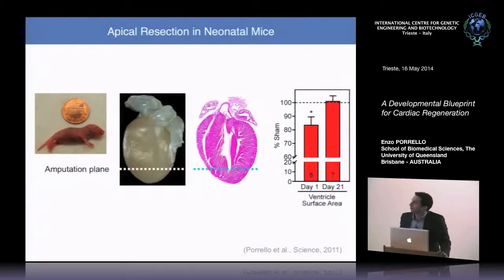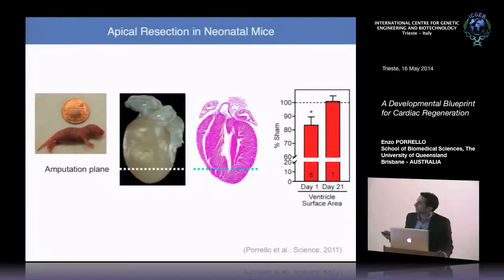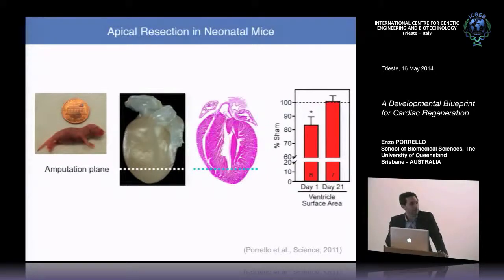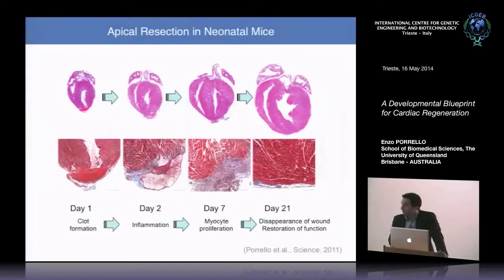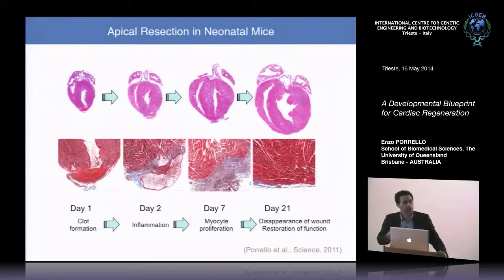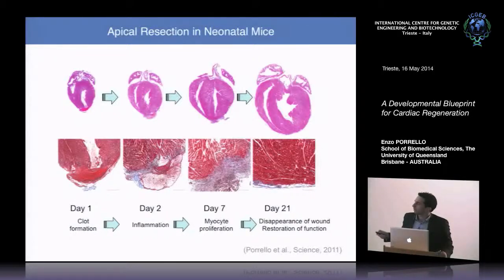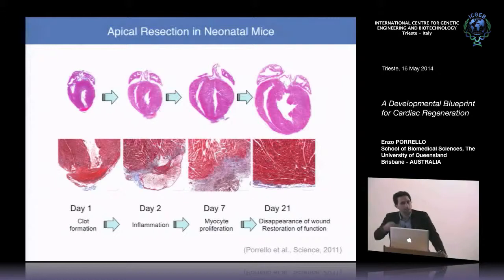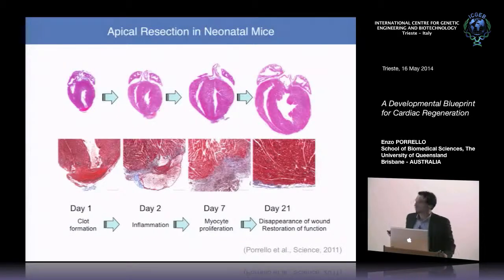We established a surgical model of cardiac injury in one-day-old mice, amputating a small portion of the ventricular apex — about 15% of the cardiac ventricle. We found that one-day-old neonatal mice were able to regenerate following apical resection injury through a series of events similar to zebrafish: blood clot formation, inflammatory cell infiltration, extensive myocyte proliferation and ECM deposition. By day 21, there was very little fibrosis, with restoration of cardiac function.